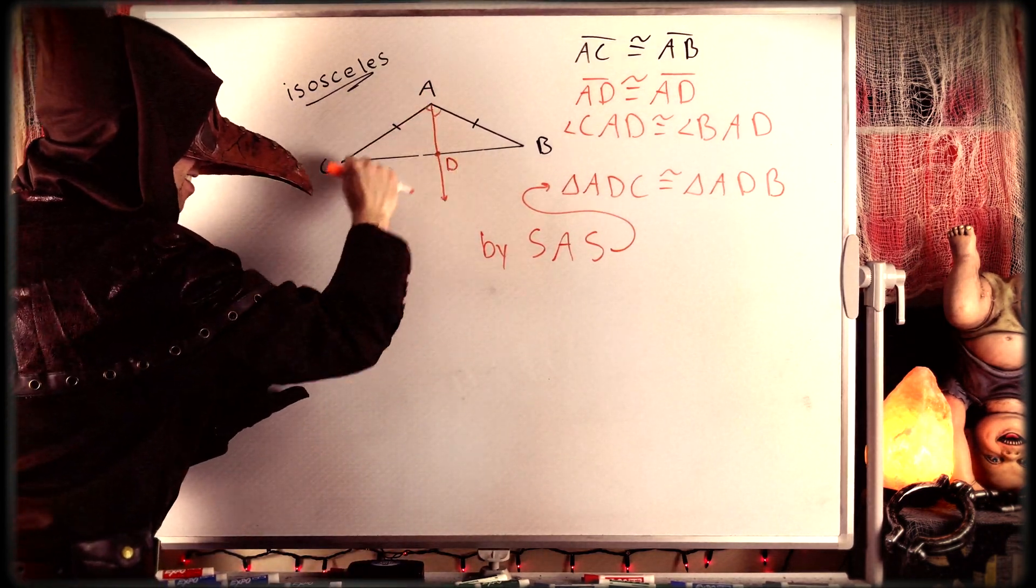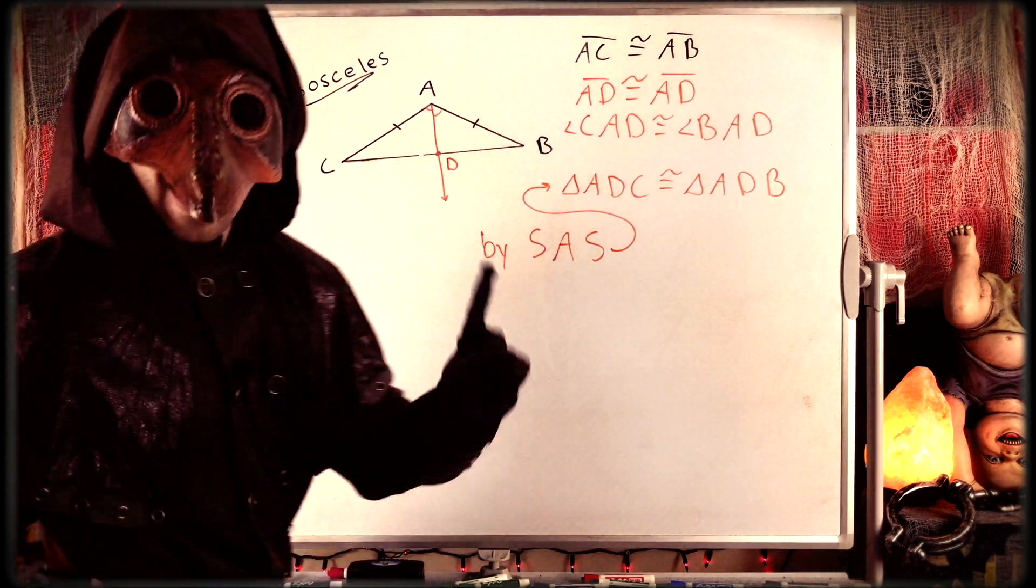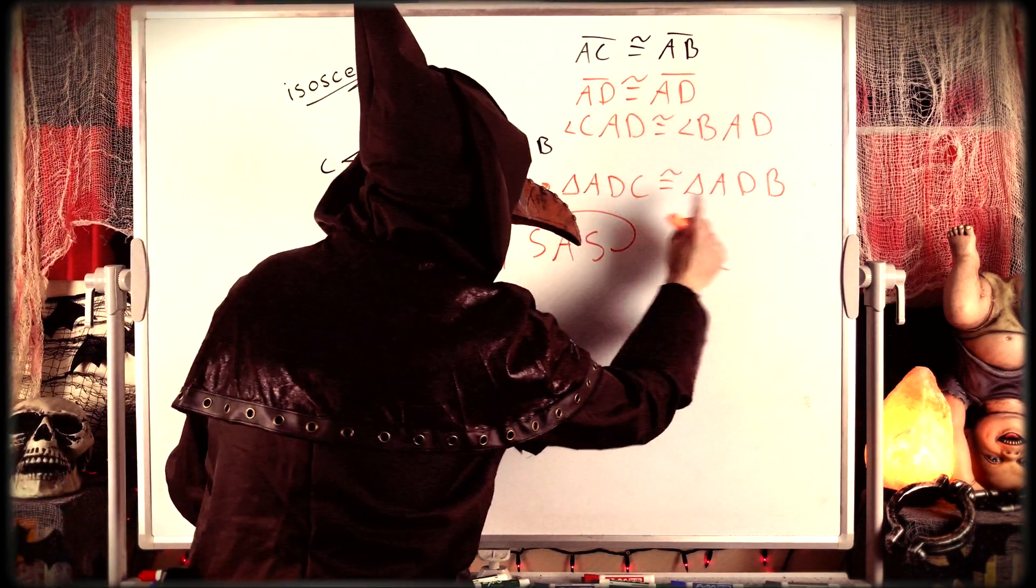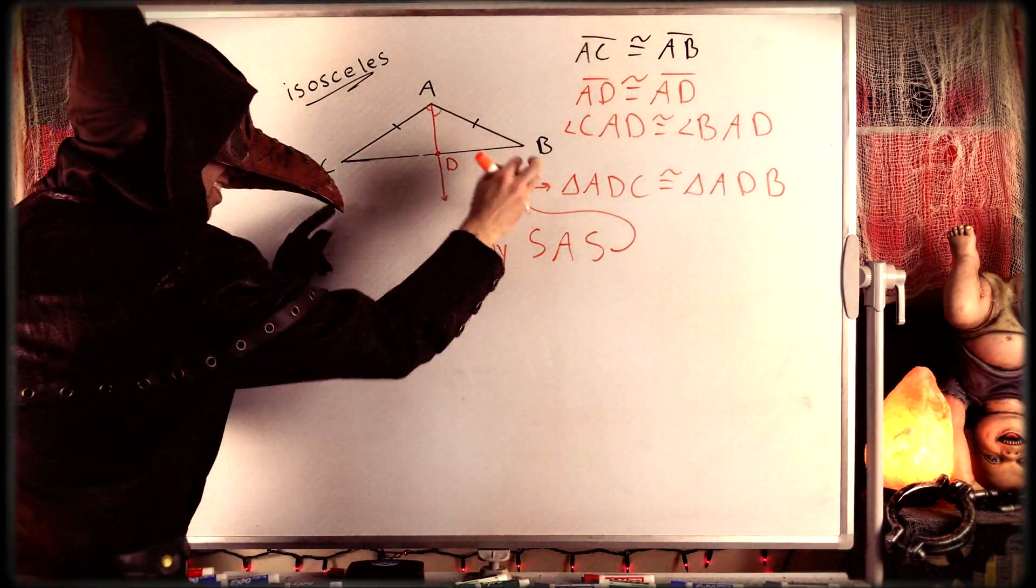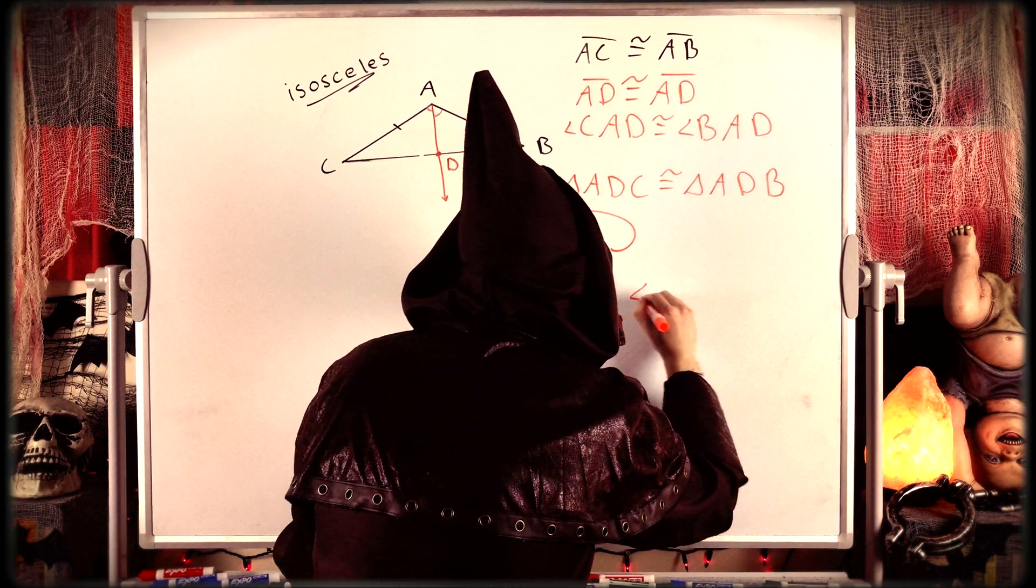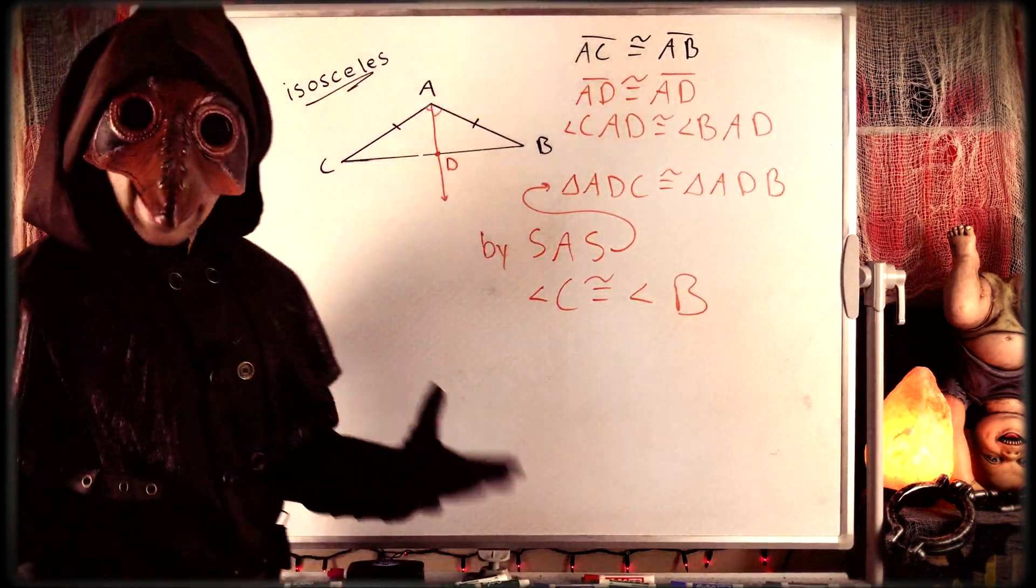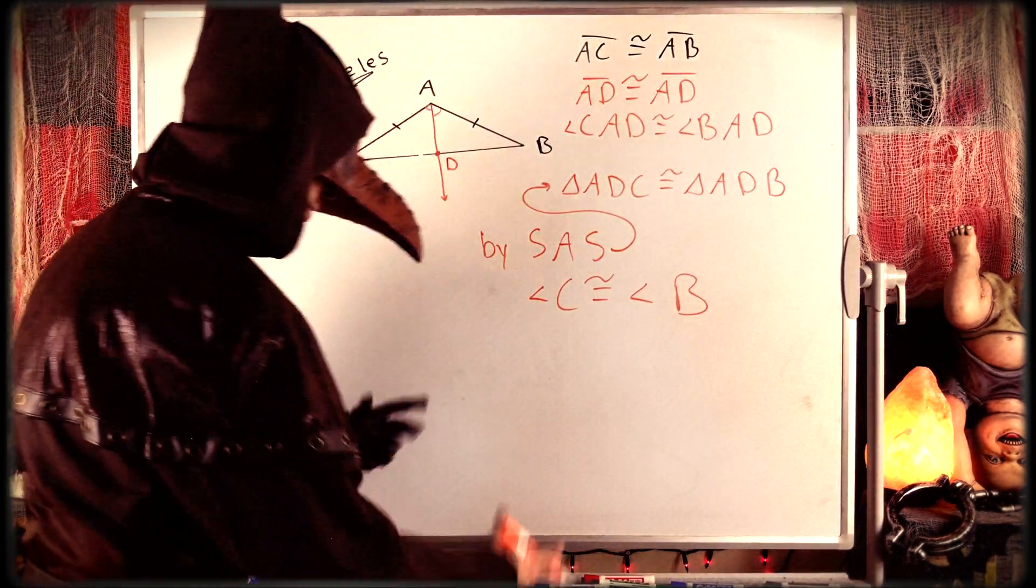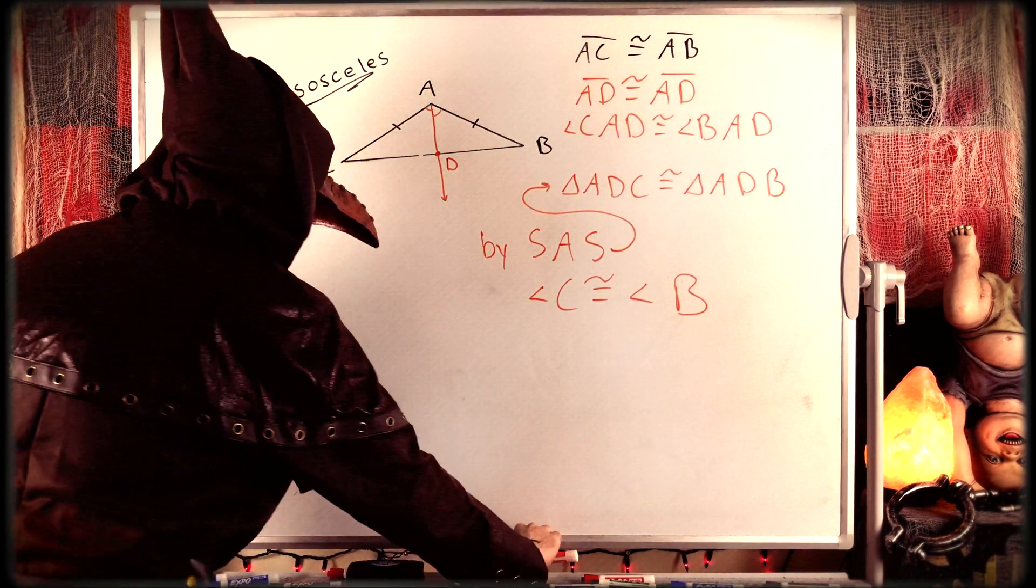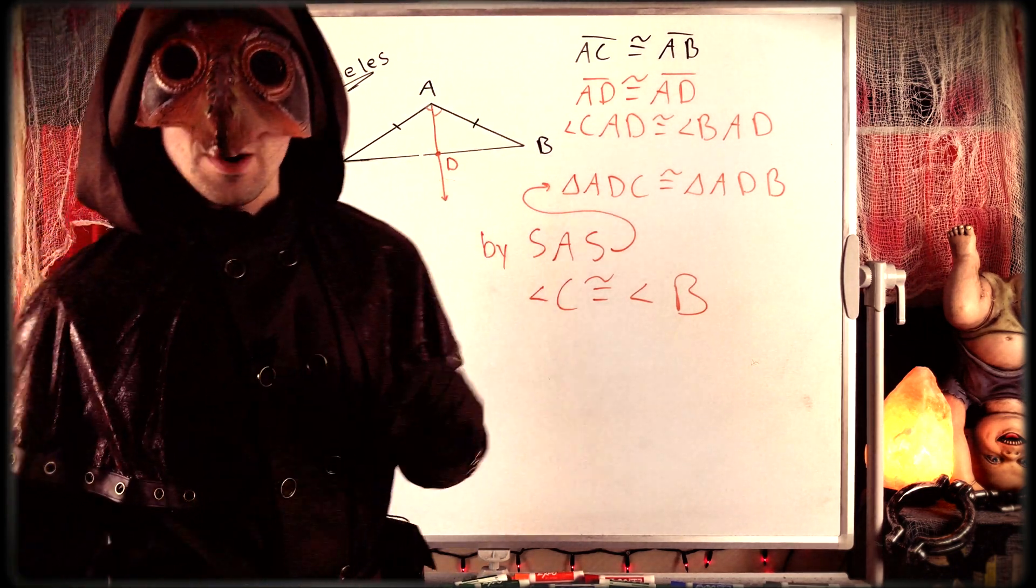Triangle ADC, that one there, is congruent to triangle ADB. Thus, since corresponding parts of congruent triangles are congruent, we have our desired result that angle C is congruent to angle B. We'll write that here. Angle C is congruent to angle B because these triangles are congruent, and these are corresponding angles in those congruent triangles. And so that's it. That's how you prove that in an isosceles triangle, the angles opposite the congruent sides are also congruent.